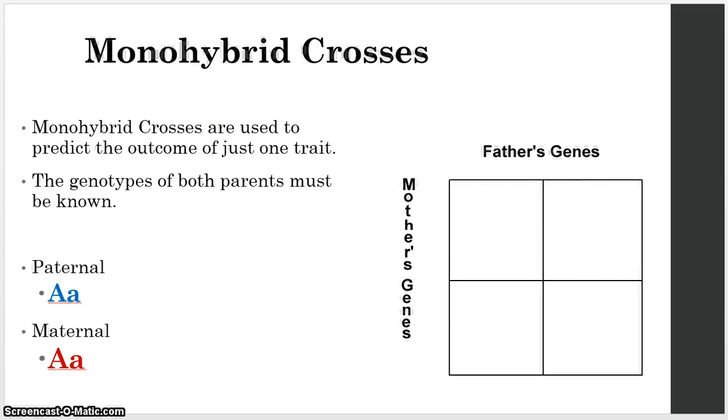Alright. So moving on to a monohybrid cross. How do we set it up? How do we fill it in? Well, the first thing is in a monohybrid cross, we're just trying to figure out how to cross just one trait. So in this case, let's say that our A stands for something that is large. And then we'll say that the recessive trait is small. Okay? This is fictional. I made it up. Just go with it.